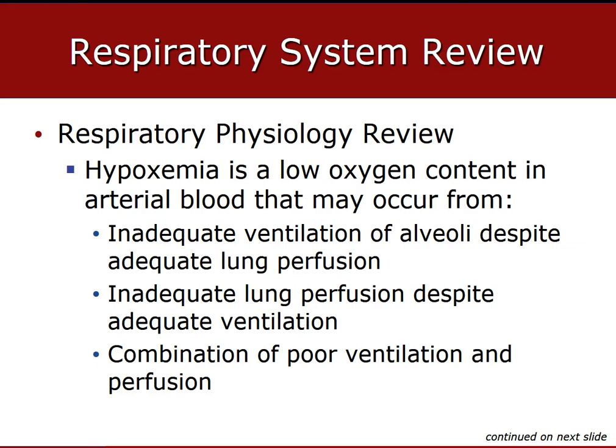Hypoxemia typically occurs from a ventilation-perfusion mismatch — something is off and they're not equal. This results in low oxygen concentration at the arterial blood level. The mismatch occurs when there's a lack of available oxygen even though perfusion to the alveoli is adequate, or when the alveoli are adequately oxygenated but perfusion is poor — such as in hypovolemic shock or cardiogenic shock — or a combination of both poor ventilation and poor perfusion.